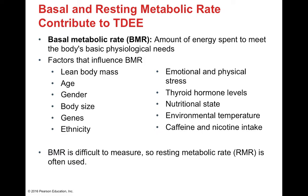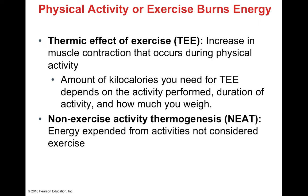Basal metabolic rate can be difficult to measure because it changes throughout the day, so your resting metabolic rate, RMR, is often used in exchange. The thermic effect of exercise is the increase in muscle contraction that occurs during physical activity — the kilocalories needed for TEE depend directly on the duration of the activity, the type of activity performed, and how much you weigh. NEAT is non-exercise activity thermogenesis: the amount of energy expended from activities not considered exercise, like walking around the house doing dishes.